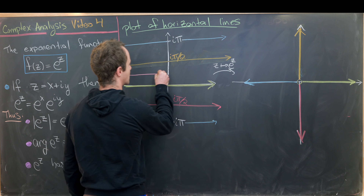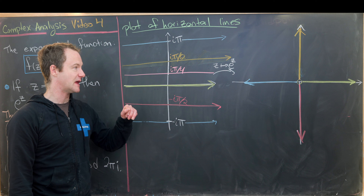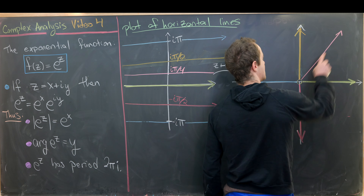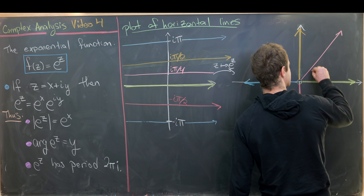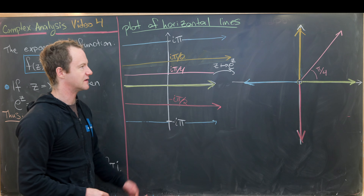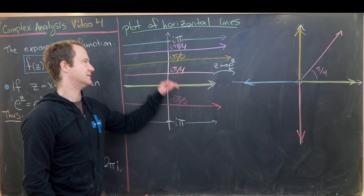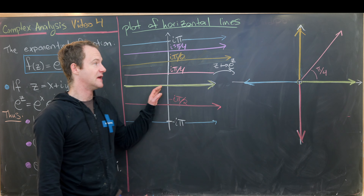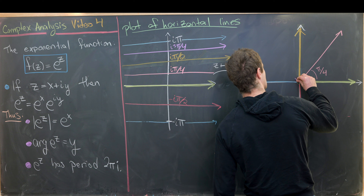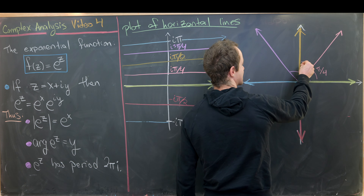Let's do iπ/4 — that horizontal line. The imaginary part turns into the argument, so the image of this line is everything with argument π/4, which is the ray going at a π/4 angle. Similarly, the line at i·3π/4 maps to points where the argument is 3π/4 — that's a 45-degree angle between the positive imaginary axis and the negative real axis.